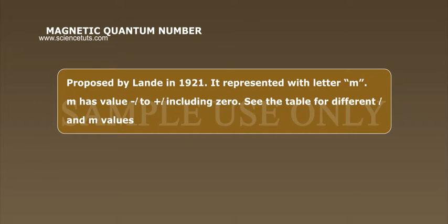Magnetic quantum number. Proposed by Landy in 1921. It is represented with letter m. m has value minus l to plus l including 0.